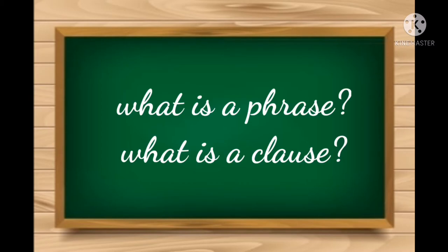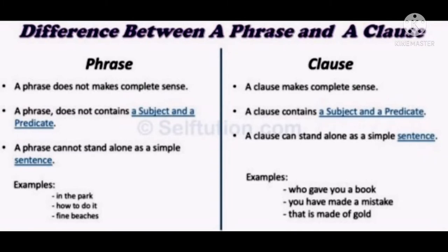Before starting today's class, let me ask you two simple questions. Do you know what is a phrase and what is a clause? A phrase is a group of words which does not make complete sense, which means that it does not have a full meaning. A phrase does not contain a subject and a predicate. A phrase is a group of words without a subject and a predicate, so it cannot stand alone as a simple sentence. It is an incomplete group of words — when we hear it, we can say that the sentence is incomplete.